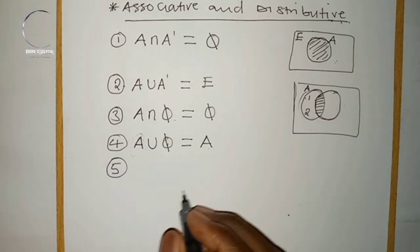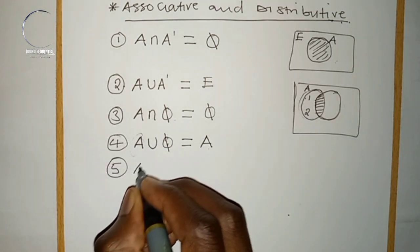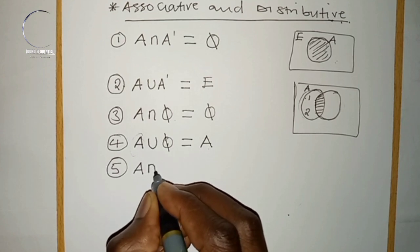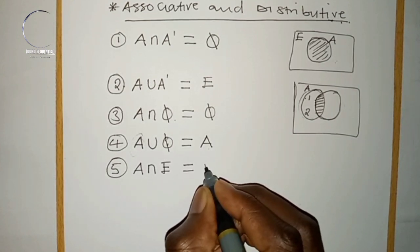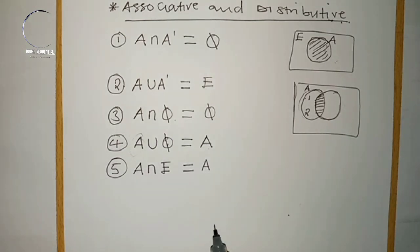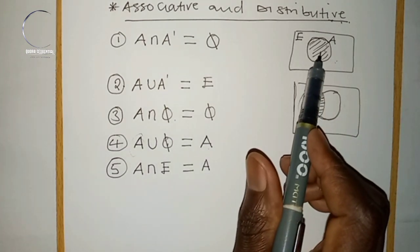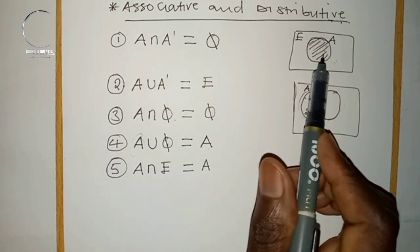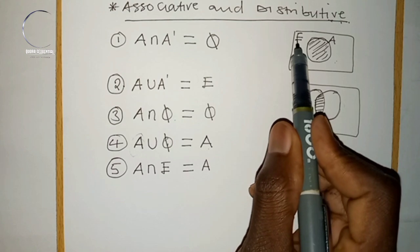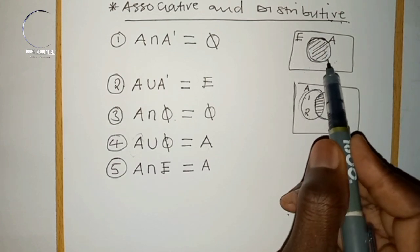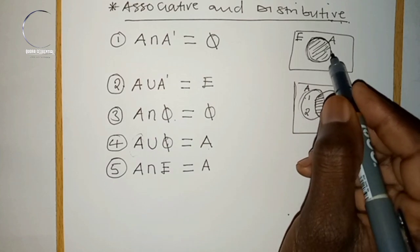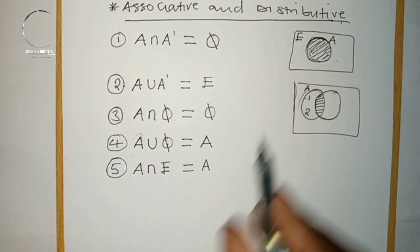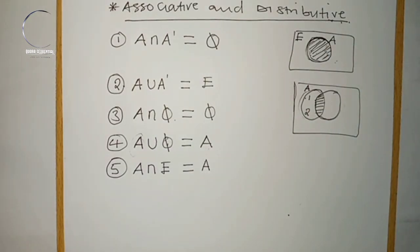The fifth rule states that a given set intersected with the universal set gives us the set itself. The universal set and set A intersect on the portion that is set A, so A ∩ U = A.